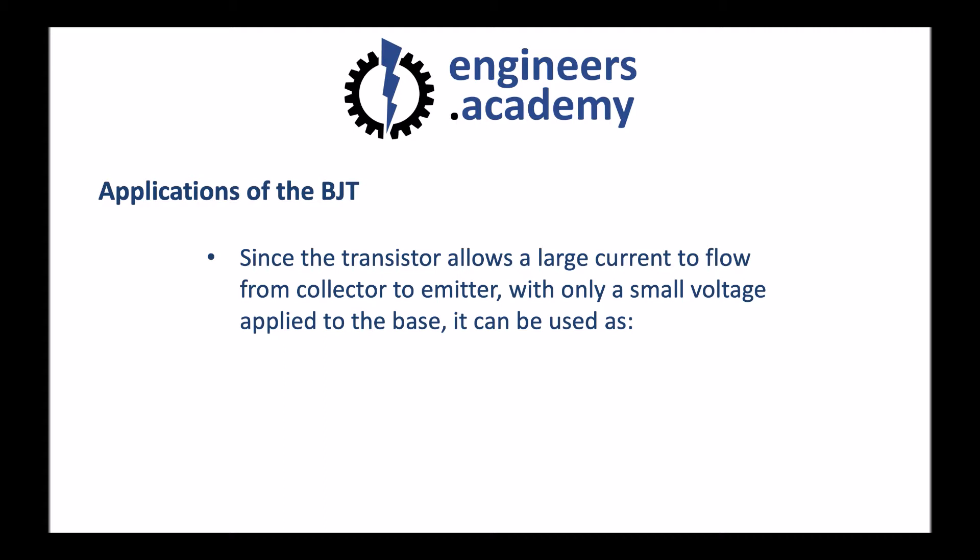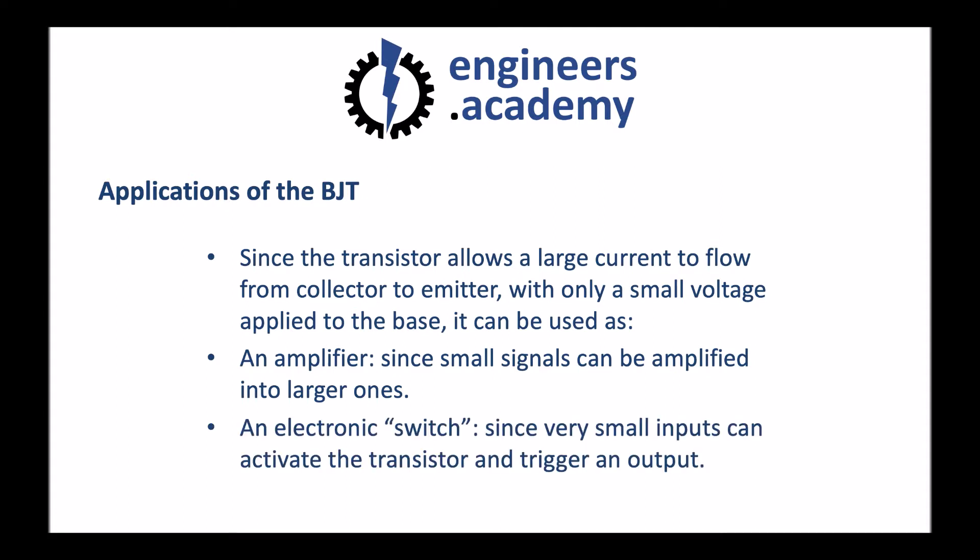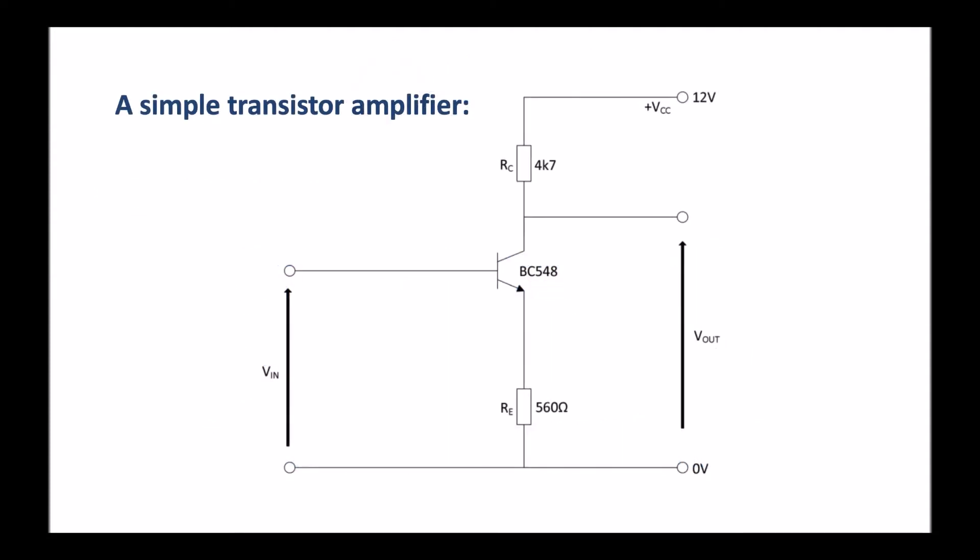Since the transistor allows a large current to flow from collector to emitter with only a small voltage applied to the base, it can be used as an amplifier, since small signals can be amplified into larger ones. It can also be used as an electronic switch, since very small inputs can activate the transistor and trigger an output. Here's an example of such a circuit where a small input seen here on the left hand side would produce a large output on the right hand side.